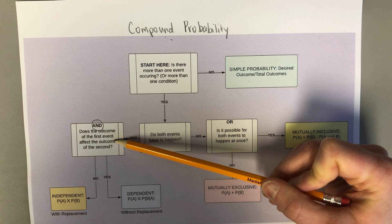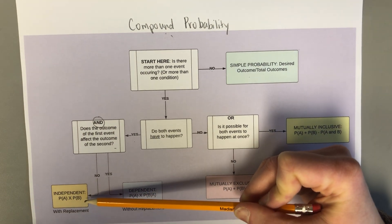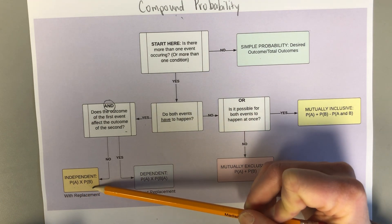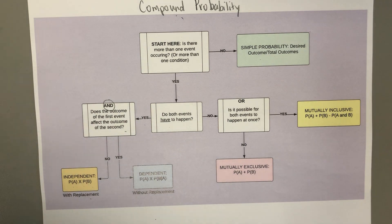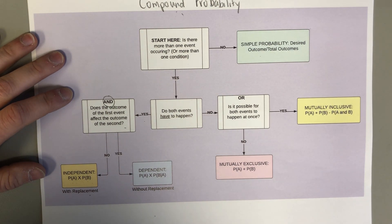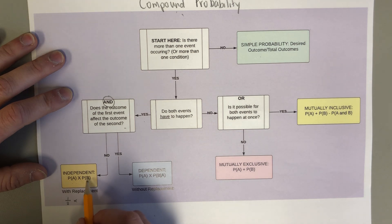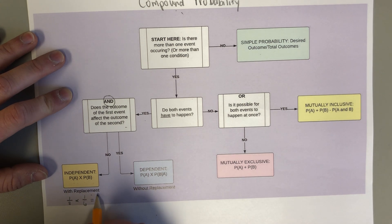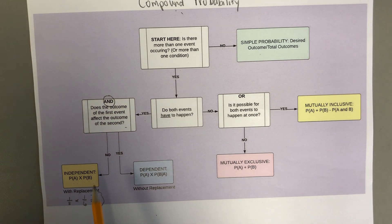Then you ask yourself: does the outcome of the first event affect the outcome of the second? If the events are separate and do not impact each other, that's an independent event. The formula is the probability of A times the probability of B. A keyword here is "with replacement" — if you're drawing cards or marbles and replacing them in between, the first event does not impact the second. For example: what's the probability that you flip heads on a coin and roll a four on a dice? The probability of heads is one-half, times the probability of rolling a four which is one-sixth, giving one-twelfth. So independent events stand alone and don't impact each other.